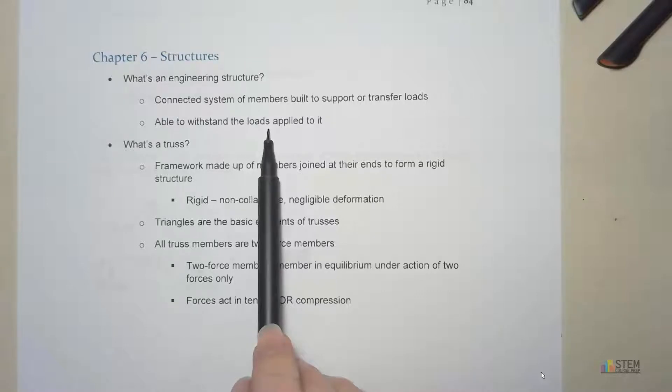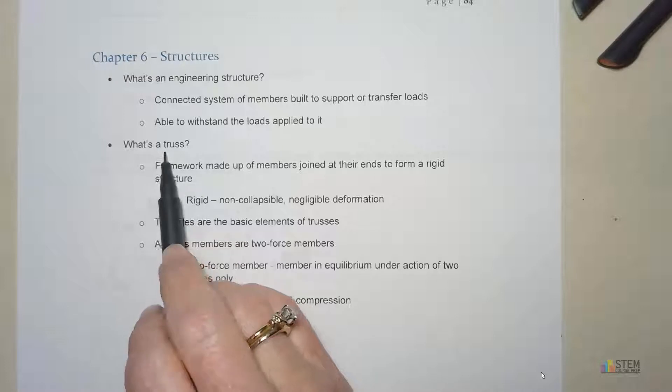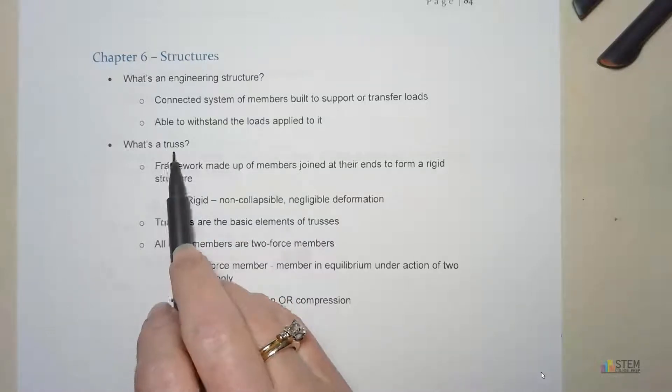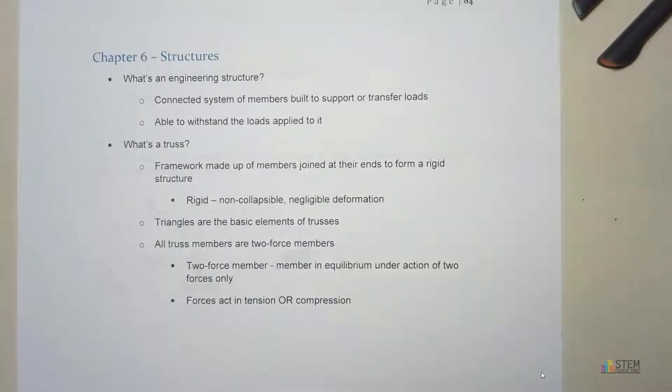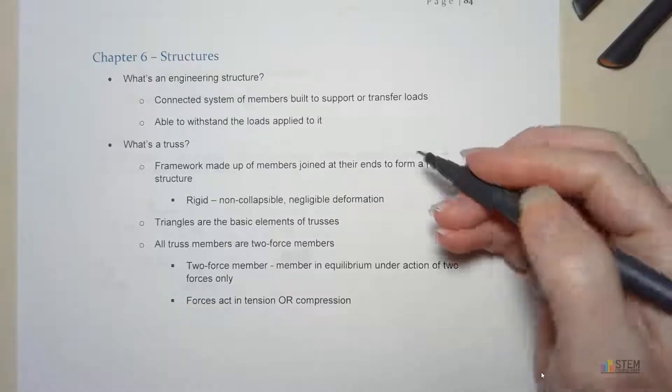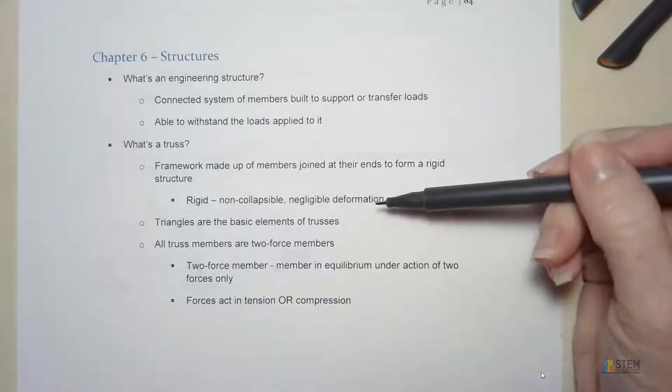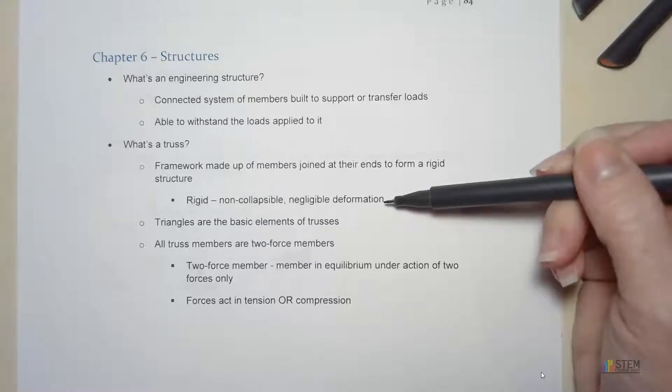So you don't want it to fail and then have your structure break down. Now first, let's talk about a truss. A truss is just going to be members that are joined at their ends to form a rigid structure. And when we say rigid, we mean it's not going to collapse and it's going to have negligible deformation.